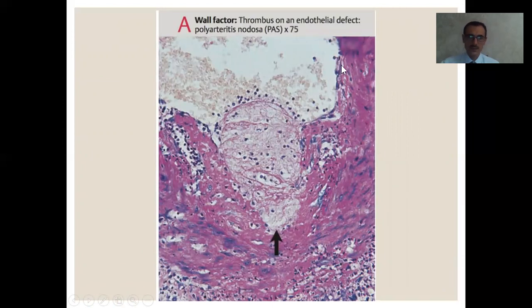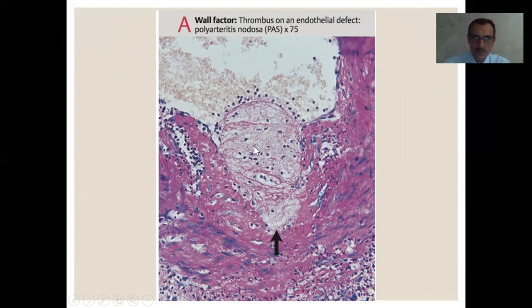Here is the histological illustration of the thrombus of an endothelial defect in polyarteritis nodosa. You see the vessels, the erythrocytes, and formation of the thrombus.